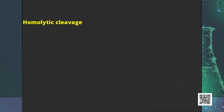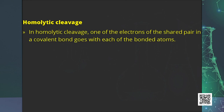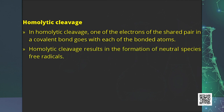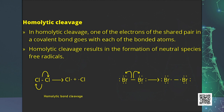Now we discuss homolytic cleavage. In homolytic cleavage, one of the electrons of the shared pair in a covalent bond goes with each bonded atom. This results in the formation of neutral species called free radicals, which are also reactive. Among free radicals, primary is least stable, secondary is more stable than primary, and tertiary is most stable. Organic reactions proceeding by homolytic fission are called free radical or non-polar reactions.